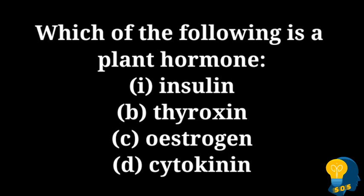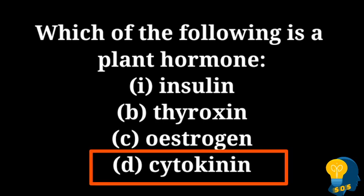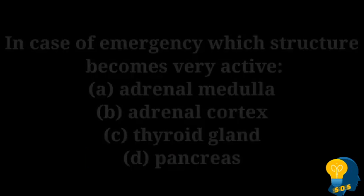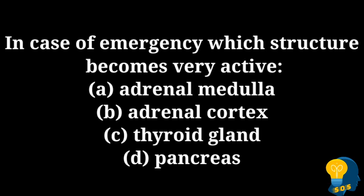The next question is: which of the following is a plant hormone? The options are option A insulin, option B thyroxin, option C estrogen, option D cytokinin. When we talk about plant hormones, there are four: auxin, gibberellin, cytokinin, and abscisic acid. So here, cytokinin is the hormone belonging to plants, whereas the other three hormones belong to animals.